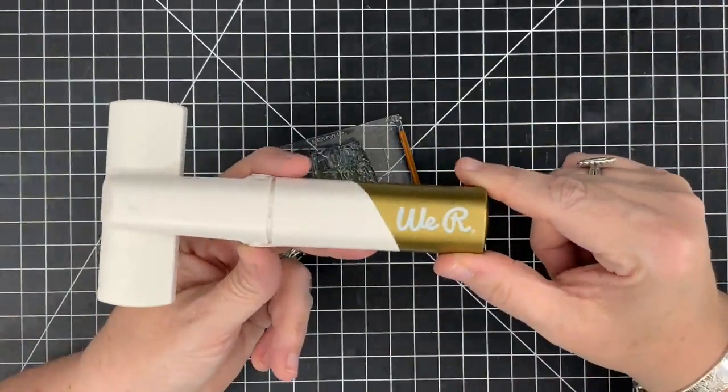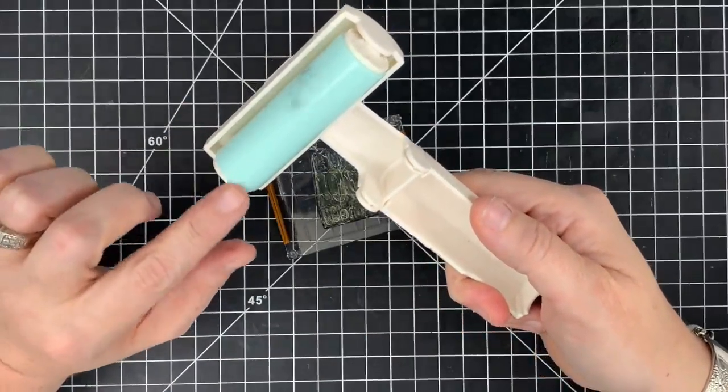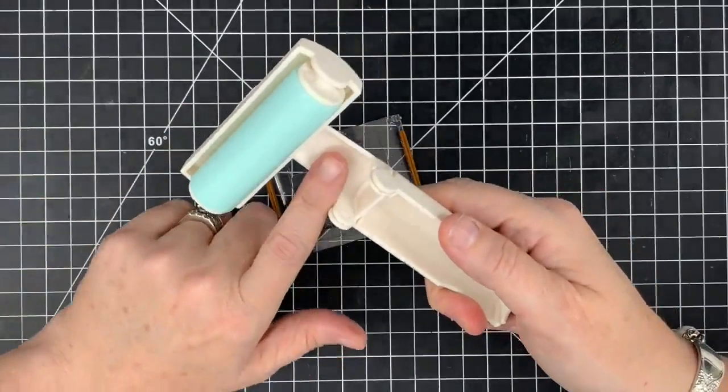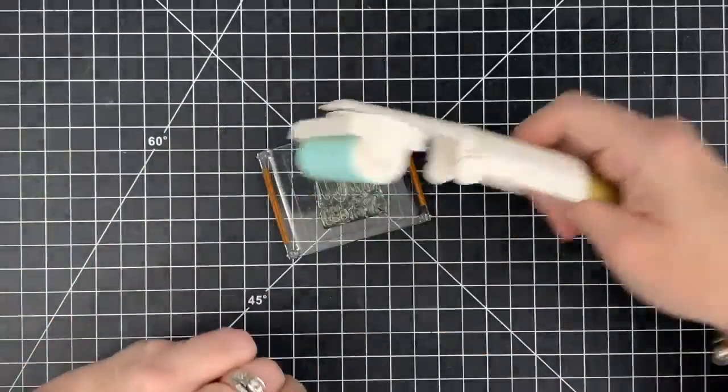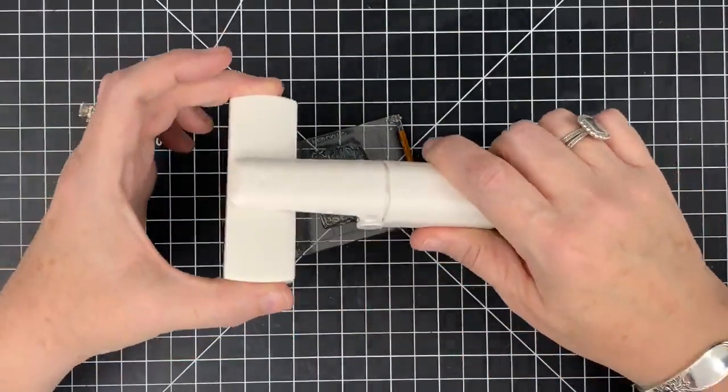So here's what I'm going to use. This is the We R lint roller tool. Now I actually had a subscriber send me a tool like this a few years ago and I was like well that's kind of smart to get all the lint off with it and then We R came out with this one and it works really well and we have these in stock.